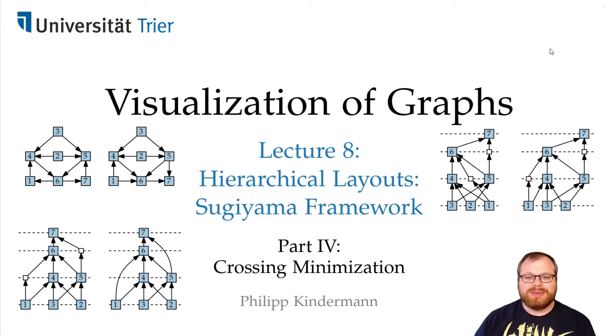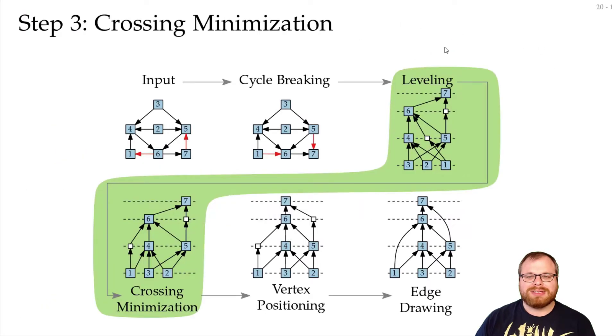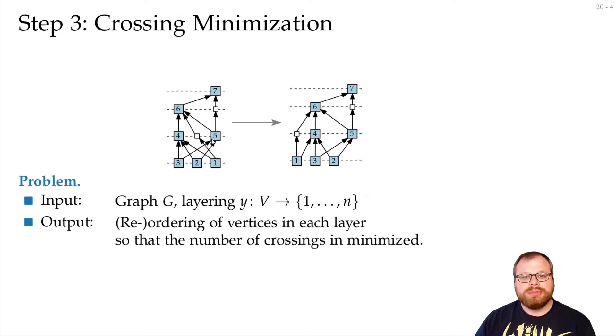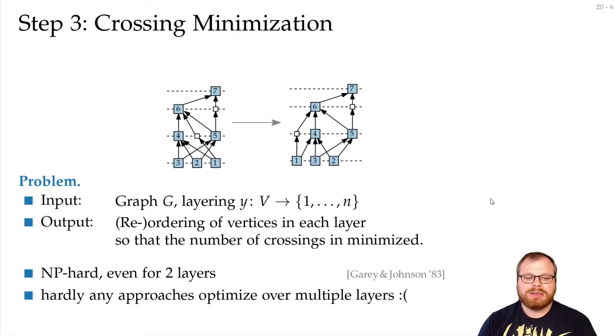In step 3 of the Sugiyama algorithm, we want to minimize the crossings. Our input is a graph with a fixed layering, and we want to permute the vertices along the layers such that the number of crossings is minimized. Unfortunately, this problem is NP-hard, even if we only have two layers, which was shown by Gary and Johnson in 83. There are hardly any approaches that optimize it over multiple layers.